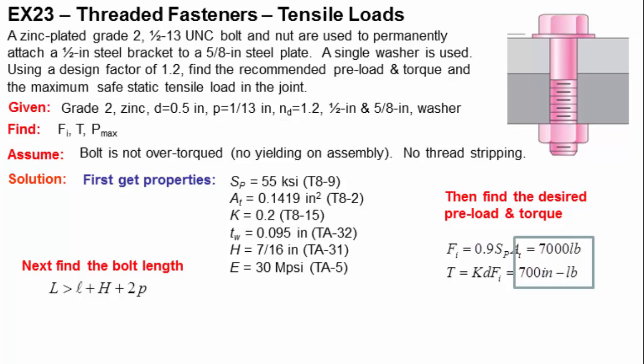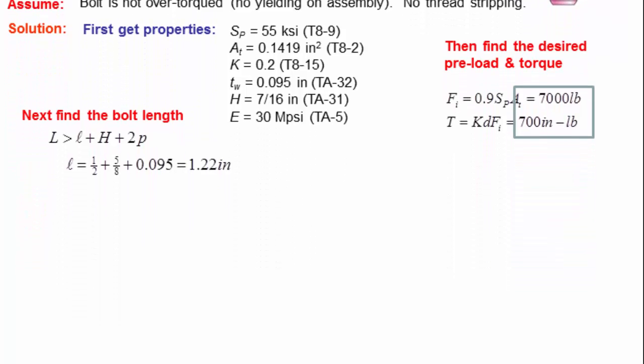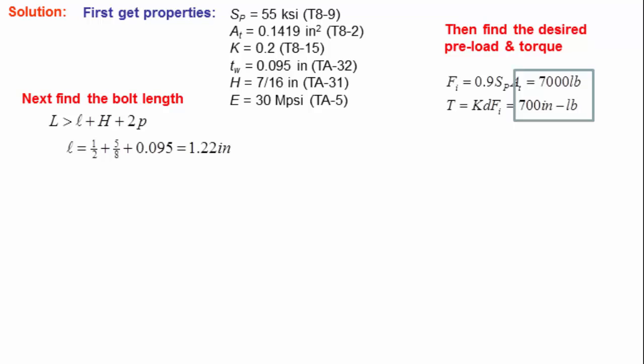I'll get that in a moment. H, then the length, or the thickness, rather, of the nut. And then it's a good recommendation that you want to leave a couple of threads outside of the nut once you've tightened it down. So I'm going to use two times the pitch to allow me to have two threads out there. That's a recommendation. So the grip is then a half inch for the steel bracket, 5-8 inch for the steel plate, and 0.095 inch for the washer. All told, it's 1.22 inches. I put that in, so that gives me a length that has to be greater than 1.81 inch. You go to the table A17, which gives you standard sizes, and I see that the next standard size up from 1.81 is going to be two inches. So this needs to be a two inch bolt.